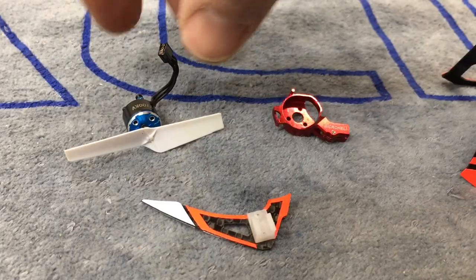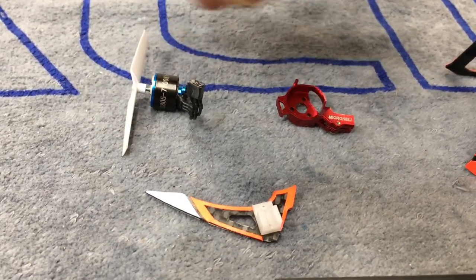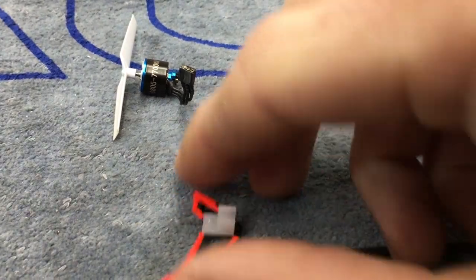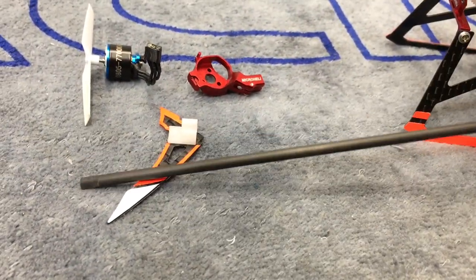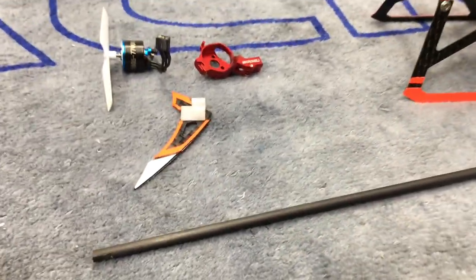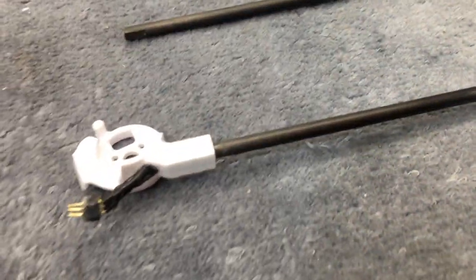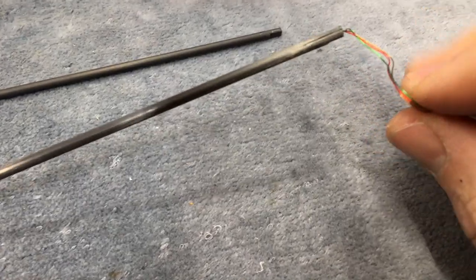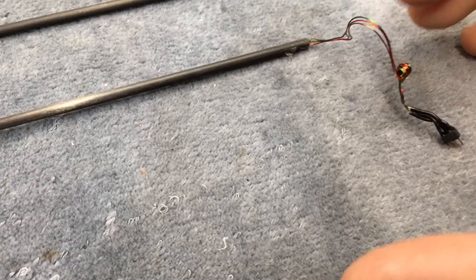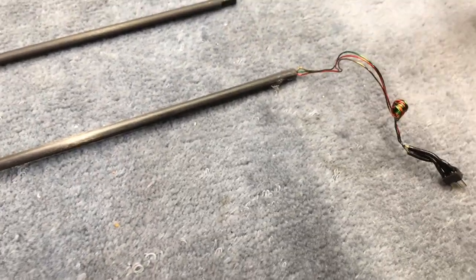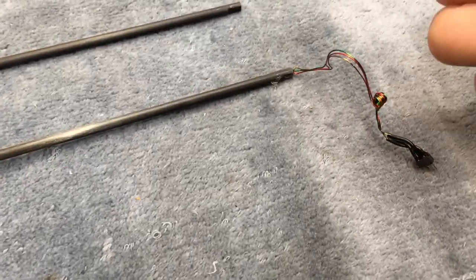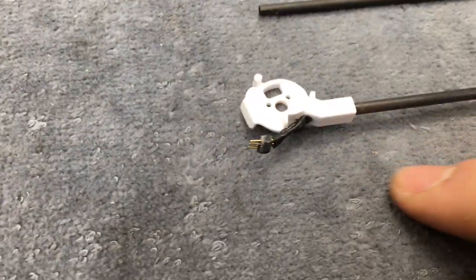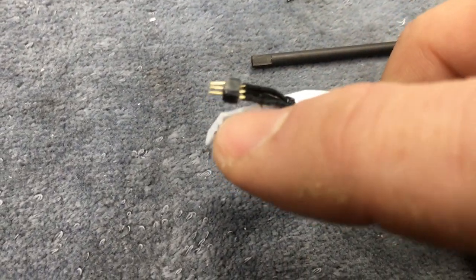So where are we at now? Now we're going to start the tail section. As you see I already pulled the motor off the stock tail boom and motor mount. We have the new micro heli aluminum motor mount, the micro heli carbon tail skid and the tail boom that came in the kit. I've had a couple people ask about doing the tail motor wires.